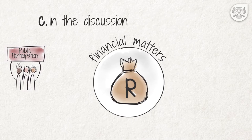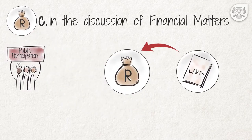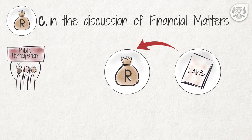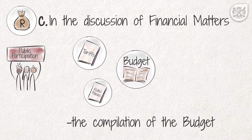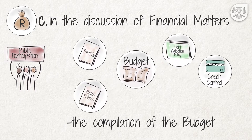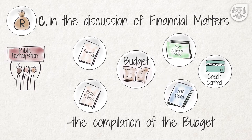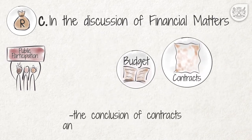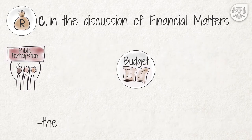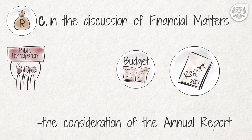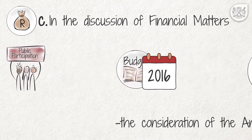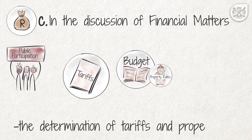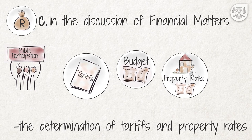C: In the discussion of financial matters. National financial legislation also requires public participation in the processes that deal with financial matters such as: the compilation of the budget, which includes tariff and rates policies; the credit control and debt collection policy; and the loan policy. The conclusion of contracts and public-private partnerships. The consideration of the annual report, which contains a lot of information on the activities that the Municipality engaged in during the previous year. And the determination of tariffs and property rates that the Municipality levies for services and property.